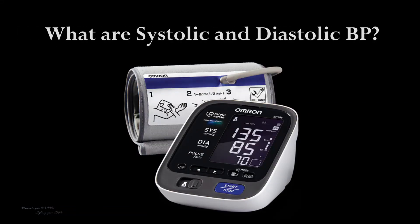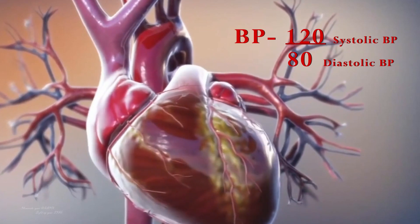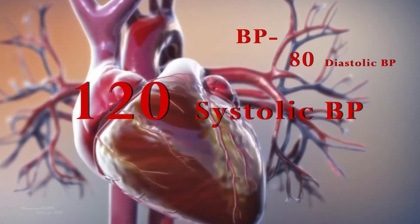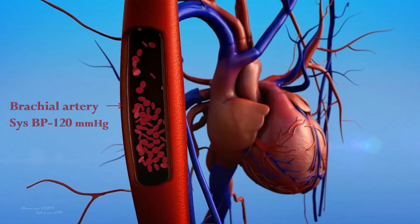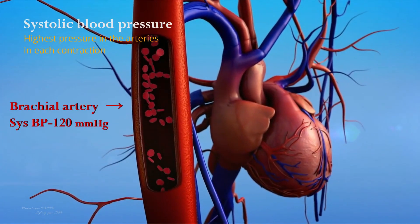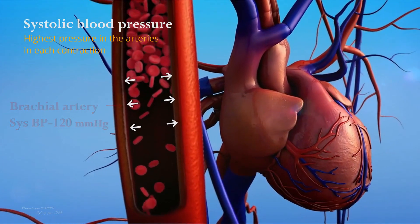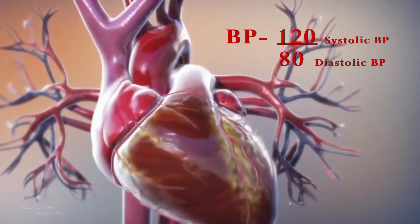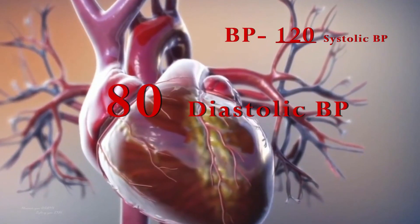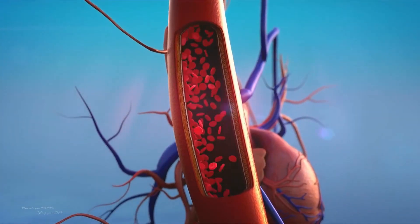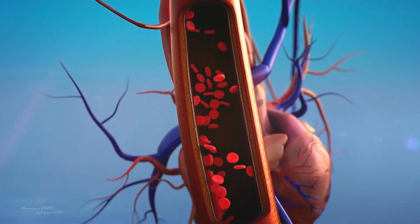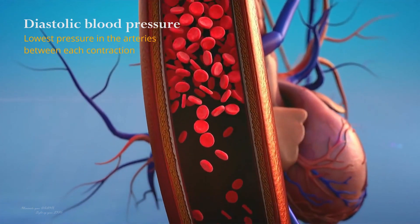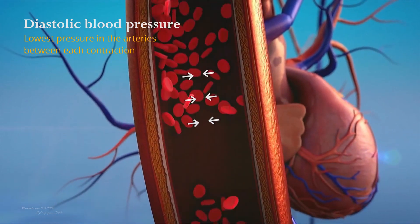Systolic blood pressure is the top number and represents the pressure in the arteries when the heart contracts and pumps blood — it is the highest pressure reached during each contraction. Diastolic blood pressure is the bottom number and represents the pressure in the arteries when the heart is at rest between contractions — it is the lowest pressure reached between each contraction.